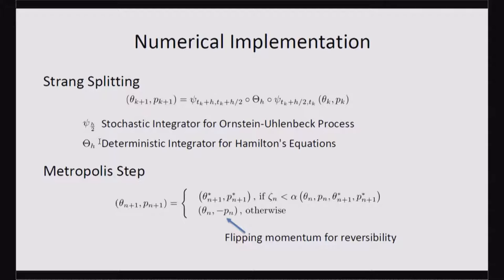So this first integrator integrates the system half a time step according to the Ornstein-Uhlenbeck process, which for the easy Hamiltonian can be done exactly. And then the second would be deterministic integrator for Hamiltonian system. And then finally for the remainder half a time step, you've reapplied the stochastic integrator.